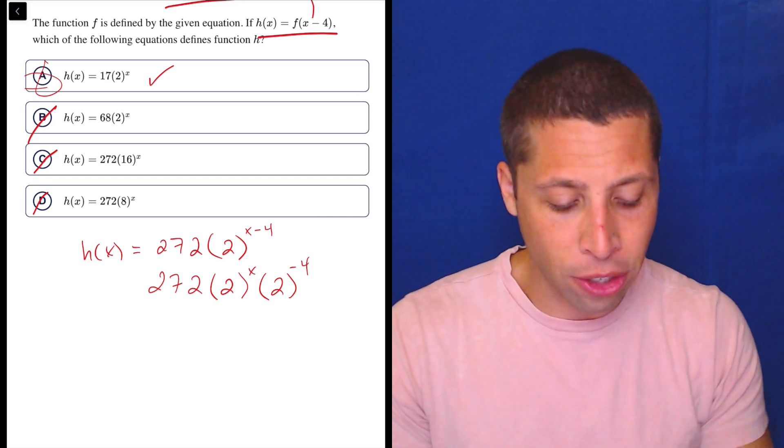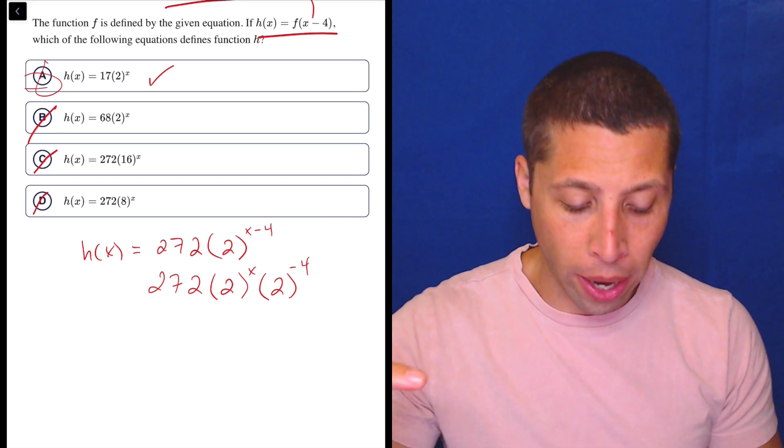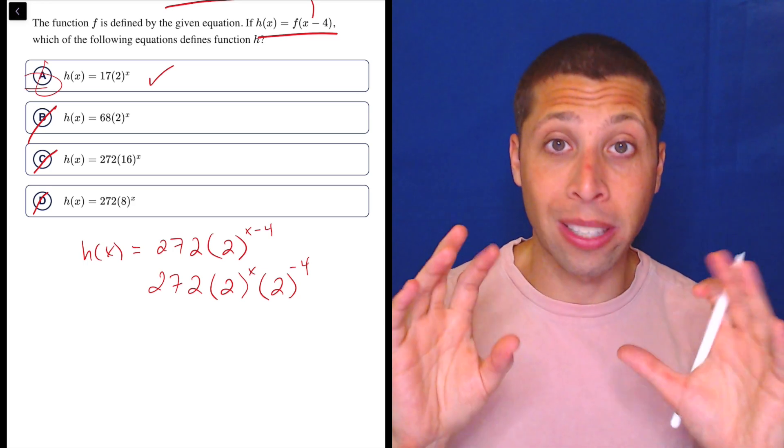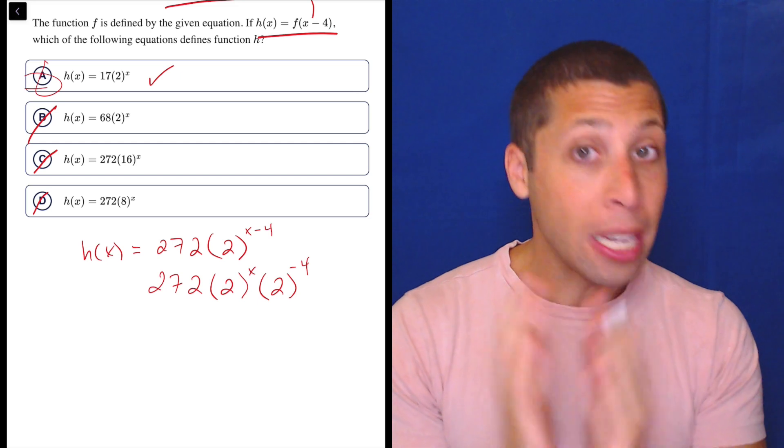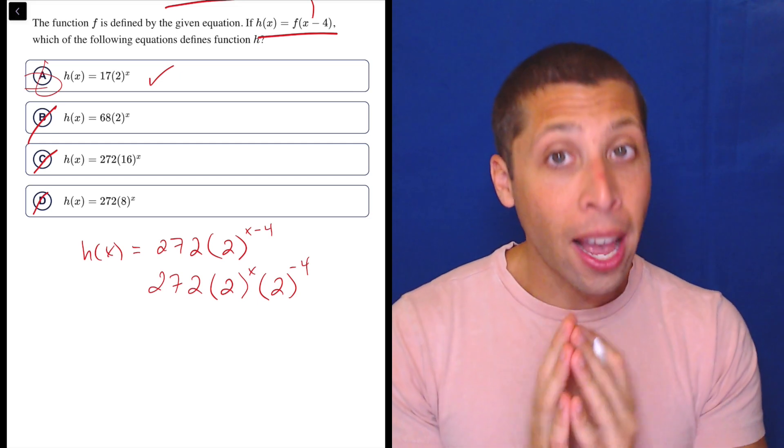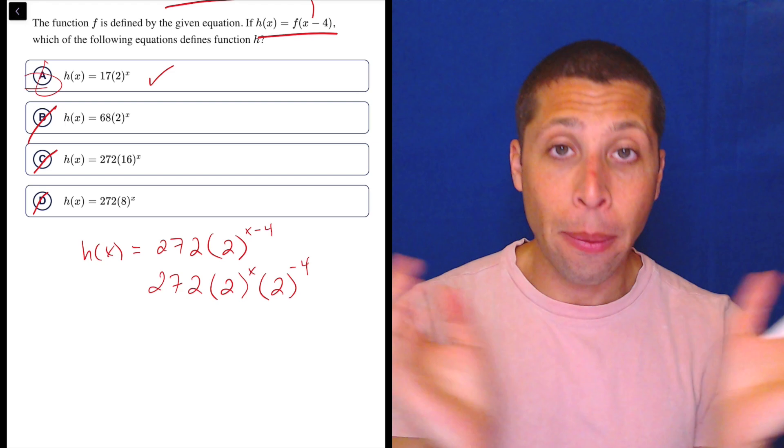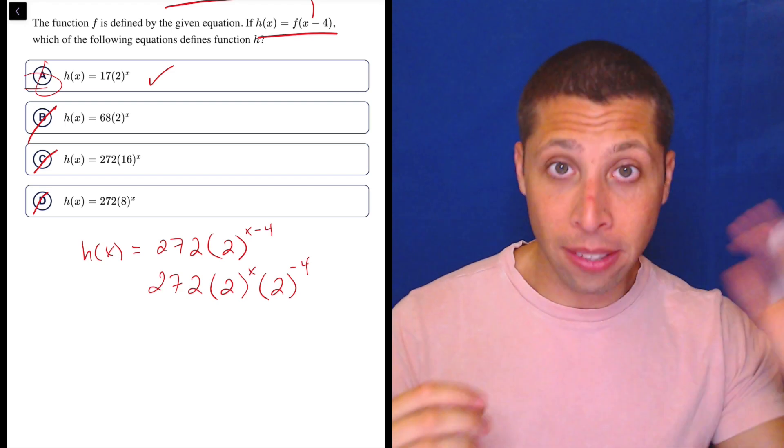But let's try to go from what I just gave you to what we started with, right? If I have 2 to the x and 2 to the negative 4, those are two things with the same base. When we multiply them together, we keep the base, the 2, we add the exponents. So, we would take x and negative 4, which are my exponents, and we would add them.